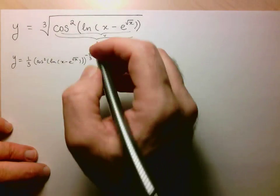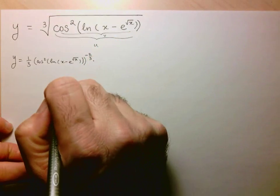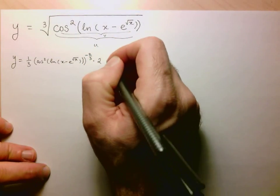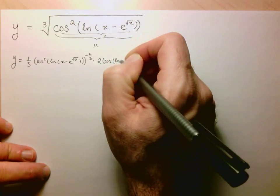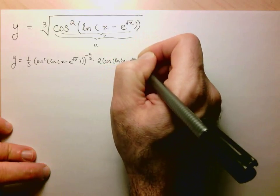I just think of this as v squared, and the derivative of v squared is just 2v. So my next part is 2 times v, and v is just cosine of ln(x - e^√x).